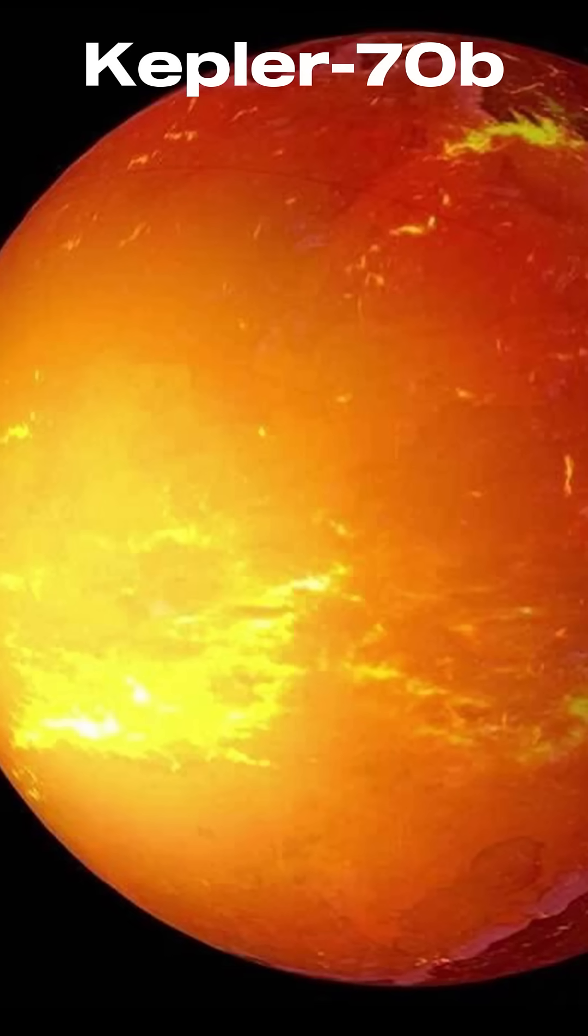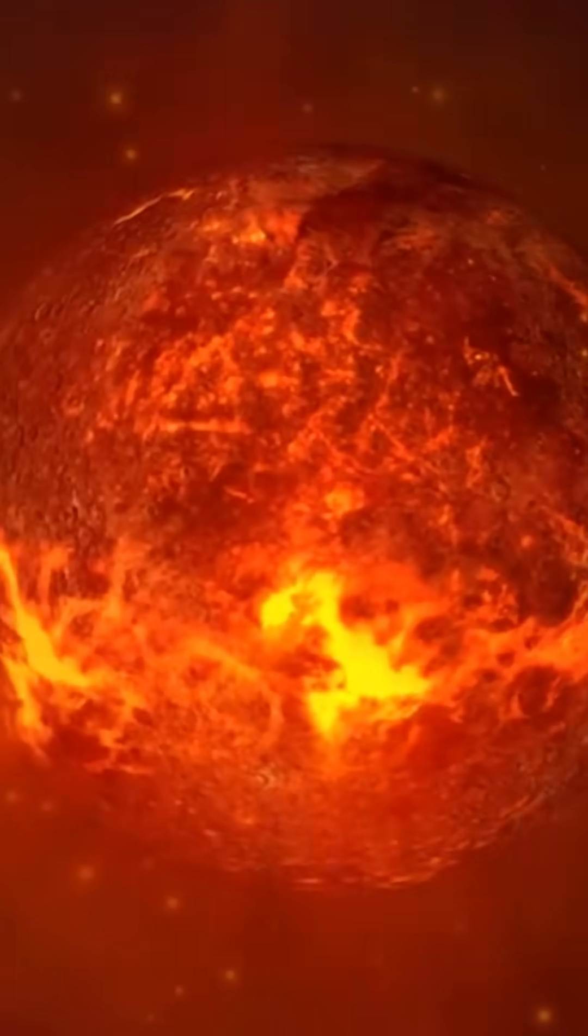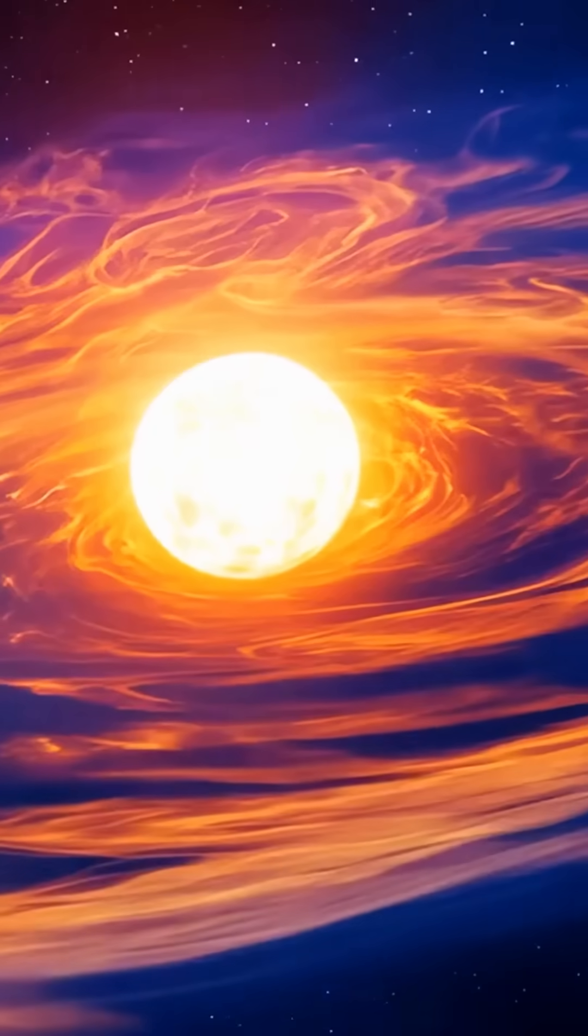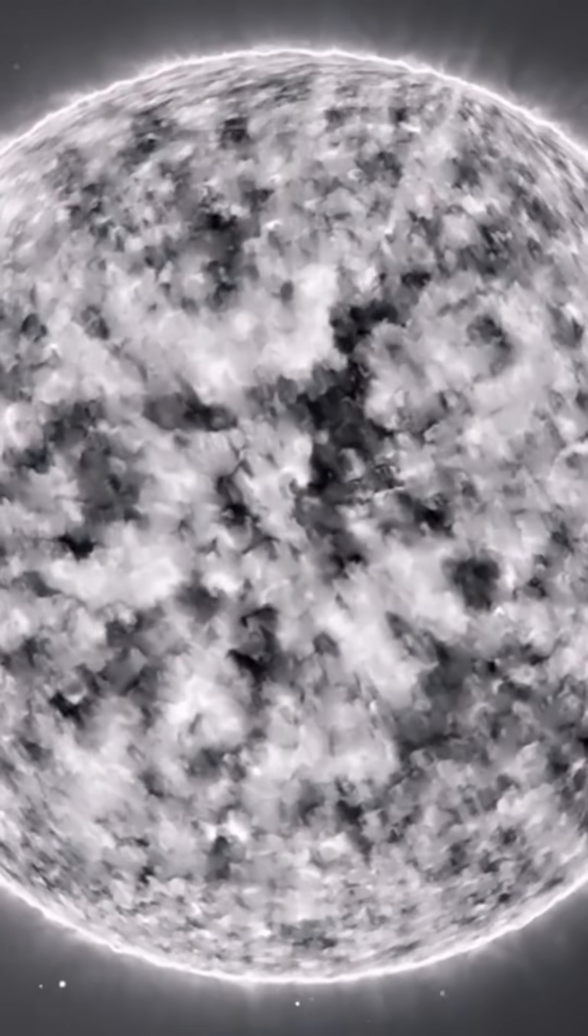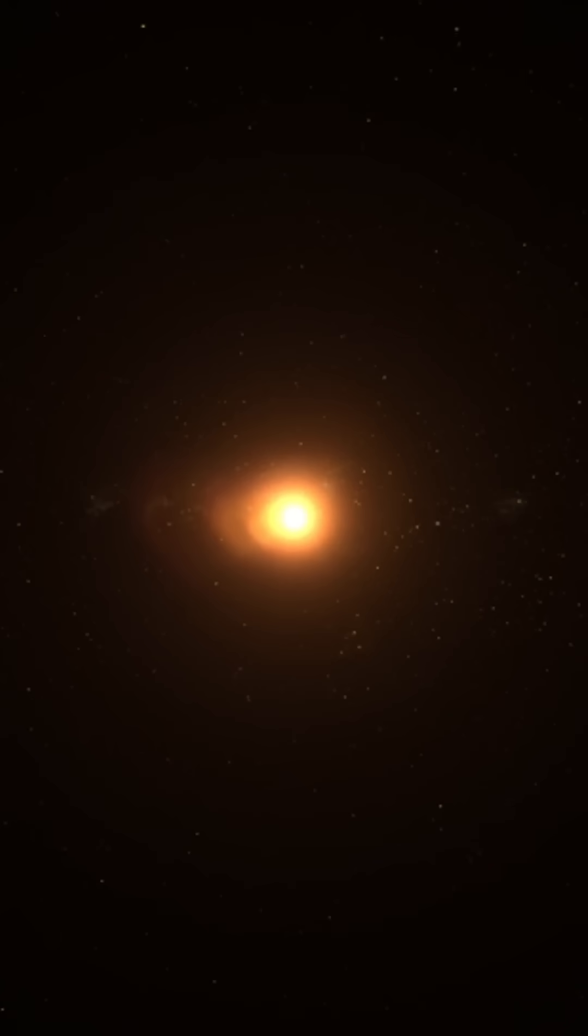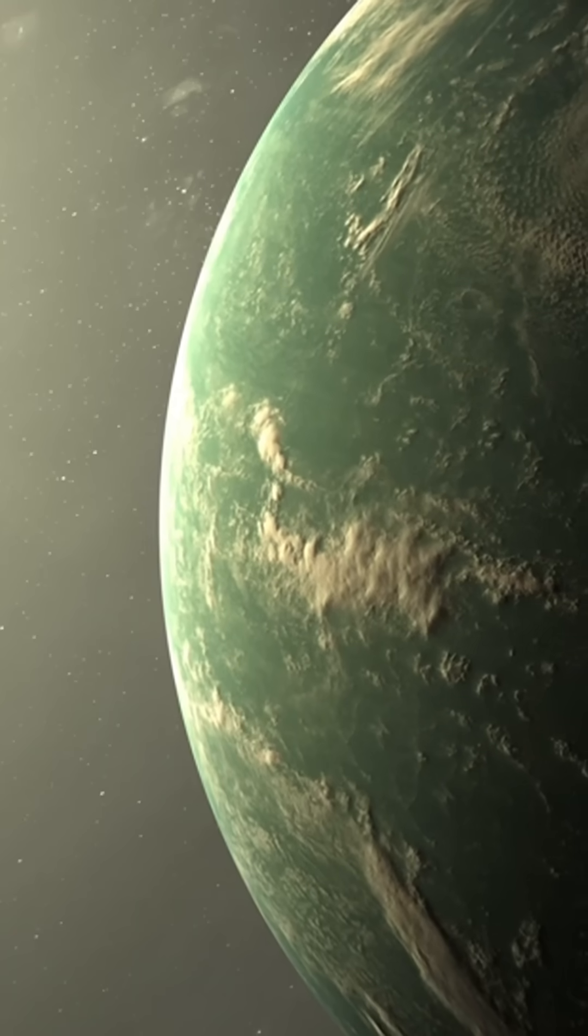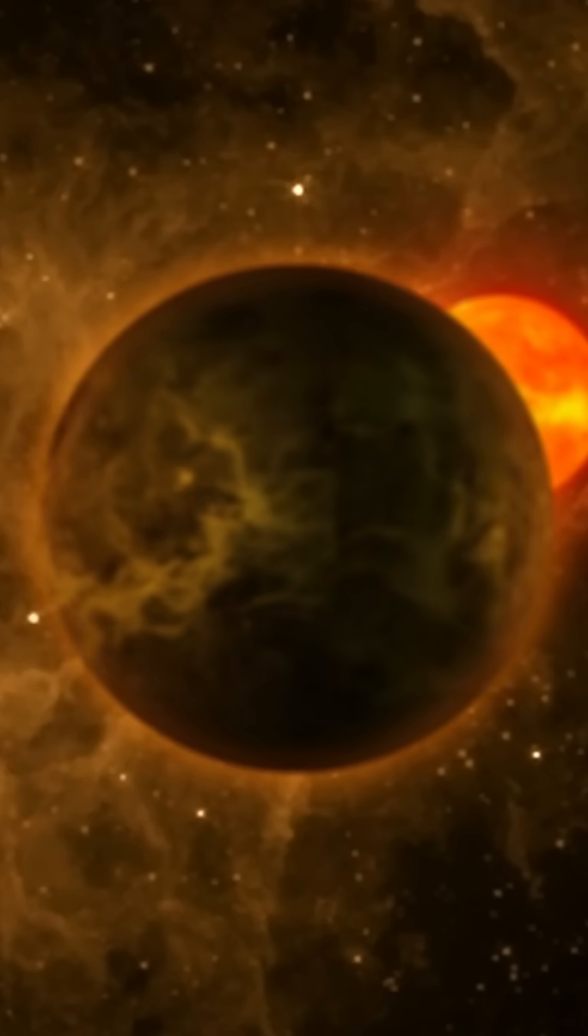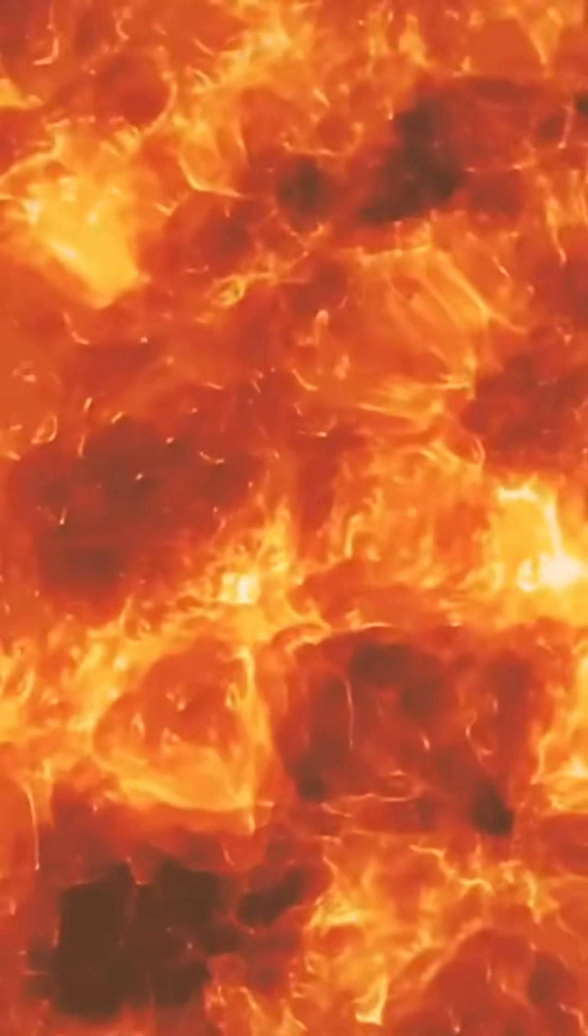Another one is Kepler-70b. It orbits a dead star, a star that once exploded. This planet is hotter than most stars. The heat melts metal. The star it circles is a white-hot leftover. This planet was once part of the star. It somehow survived. Now it races around it every few hours. One mistake and it would fall into fire again.